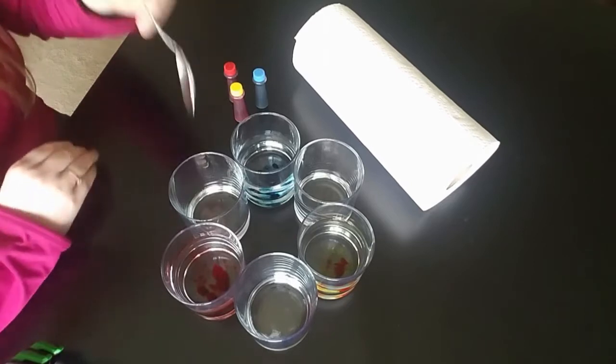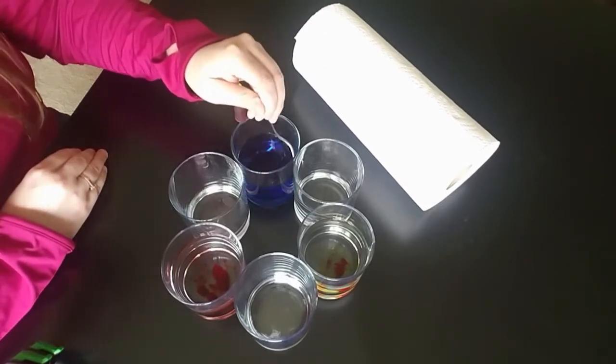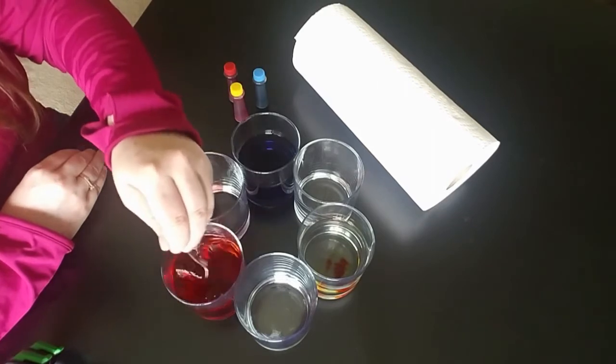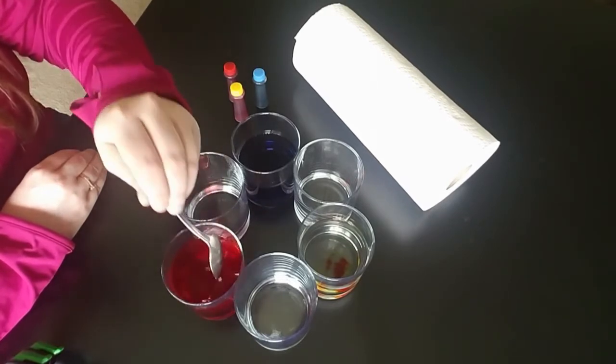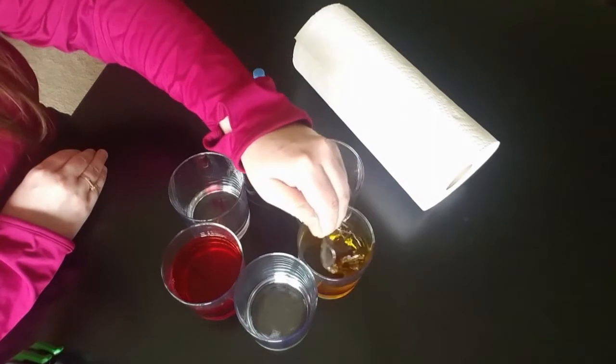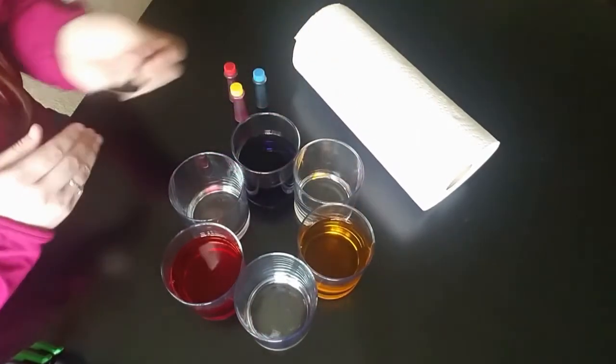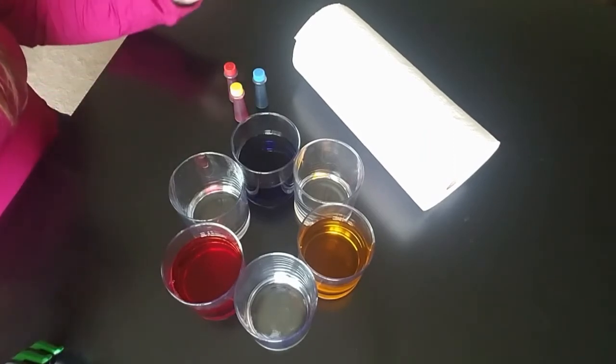Then I'm going to take my spoon and just mix up the colors so they're nice and dark. And now you have the three colors that you're going to use to make the rainbow.